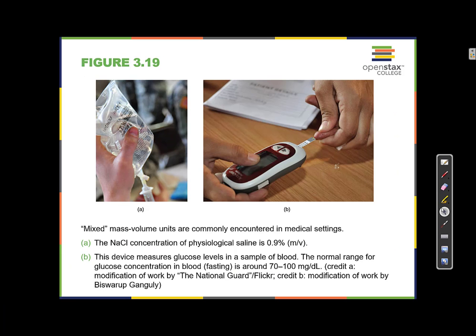Mixed mass-volume units are commonly encountered in medical settings. The sodium chloride concentration of physiological saline is 0.9% mass-volume (m/v). This device measures glucose levels in a sample of blood; the normal range for glucose concentration in blood is around 70 to 100 milligrams per deciliter — a unit of mass per volume. So milligrams per deciliter is not a percentage but another way of representing a concentration.